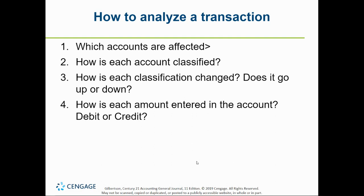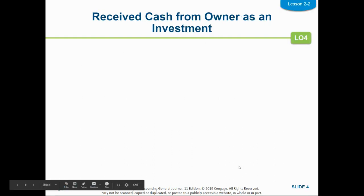The first question is: which accounts are affected? Depending on the transaction, which two accounts are affected? Then you want to know: how are they classified — are they assets, liabilities, or owner's equity? How is each classification changed — does it go up or does it go down? And how is each amount entered into the account — is it a debit or a credit?